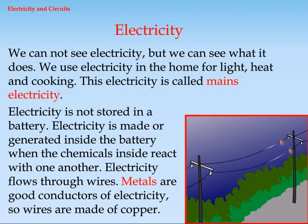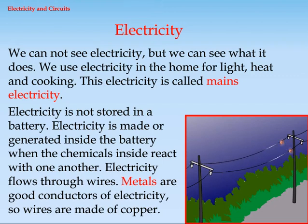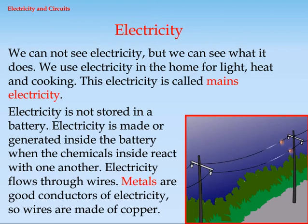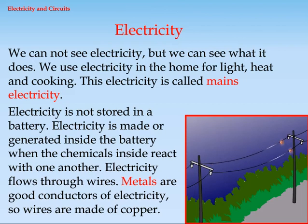Electricity is not stored in a battery. Electricity is made or generated inside the battery when the chemicals inside react with one another. Electricity flows through wires. Metals are good conductors of electricity, so wires are made of copper.